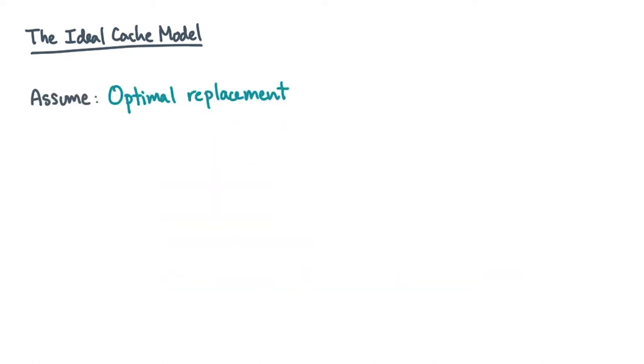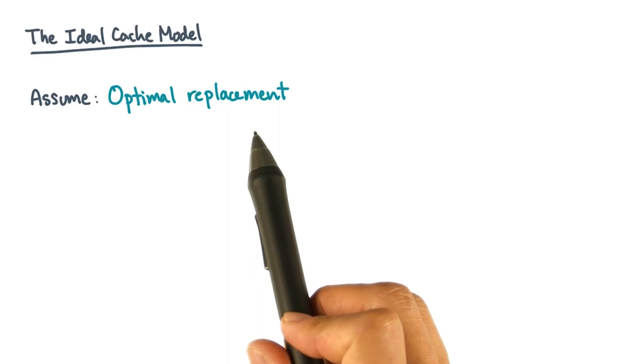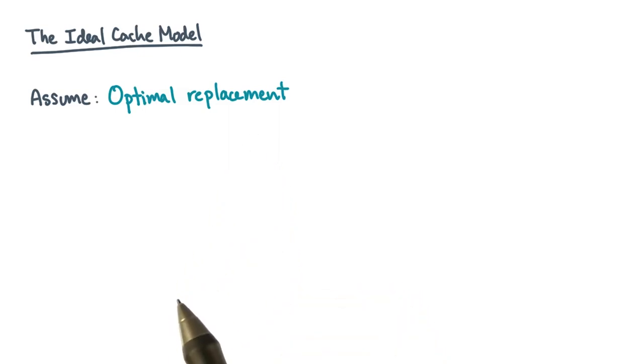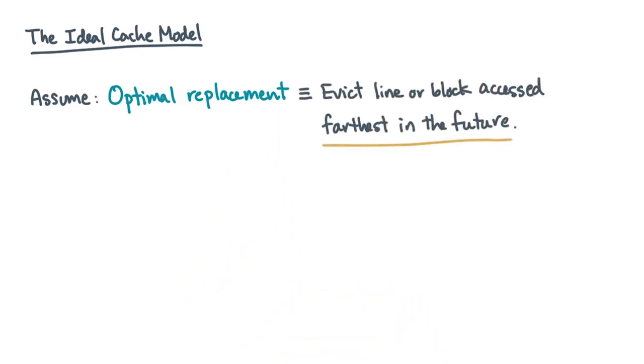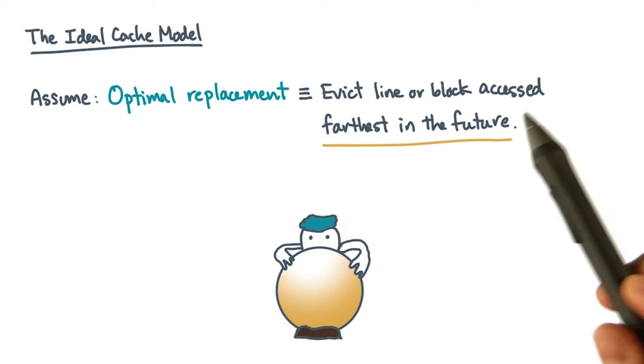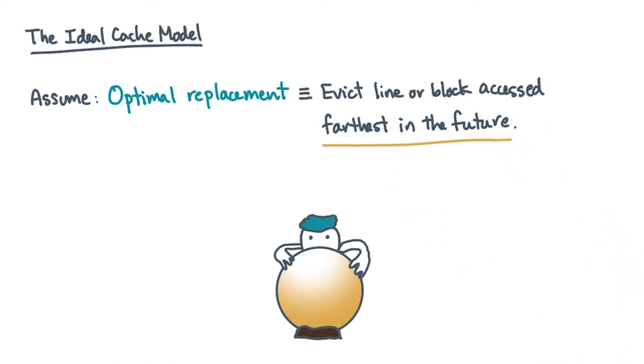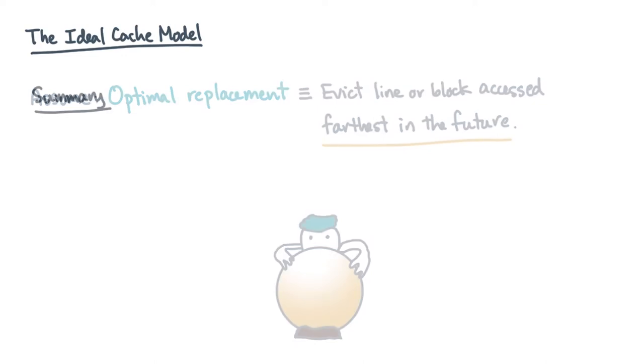That leads us to the next assumption of the ideal cache model, optimal replacement. Optimal replacement means that the hardware managing the cache actually knows the future. In particular, the hardware knows all future accesses. It looks at all the blocks currently in the cache and then evicts the one that will be accessed most distantly in the future. At first glance, this might strike you as being extremely idealistic or optimistic. But in fact, we'll do an analysis of just how powerful this assumption really is in a moment.